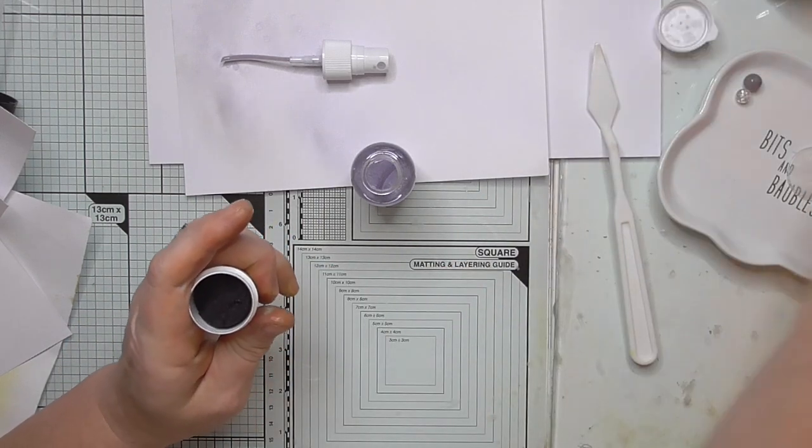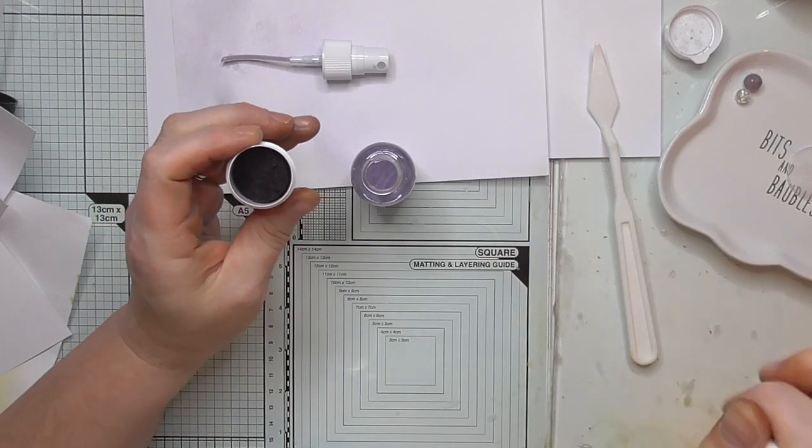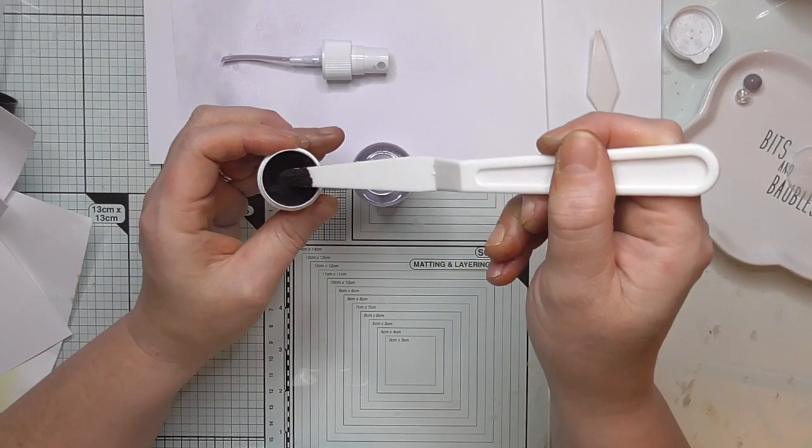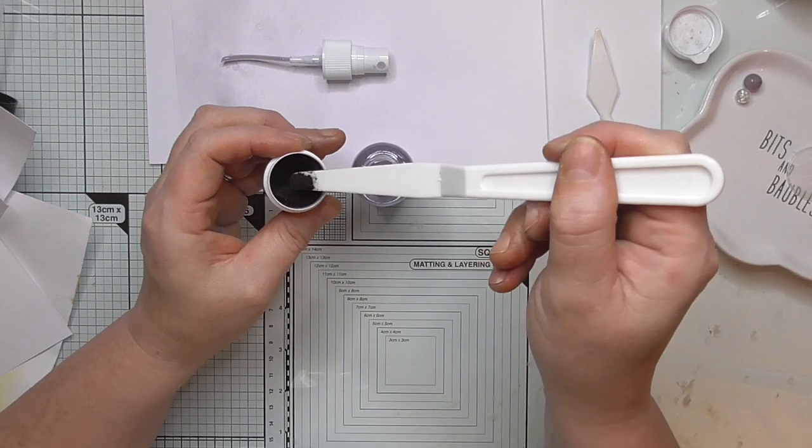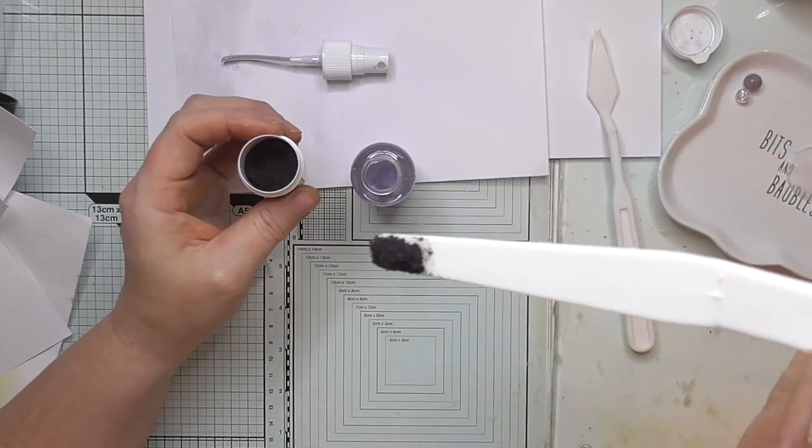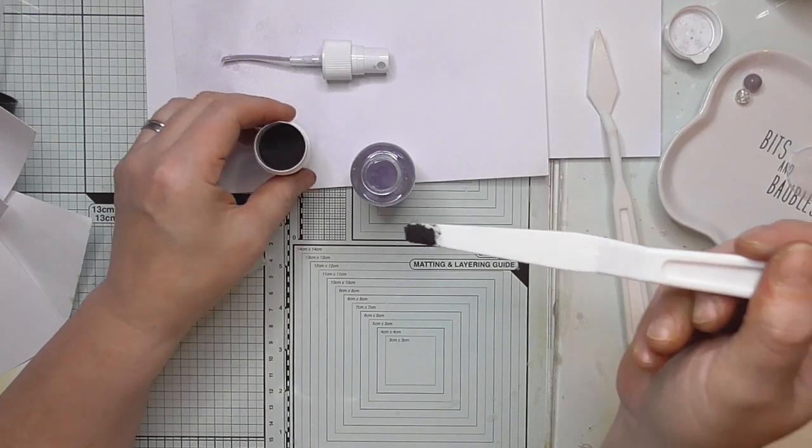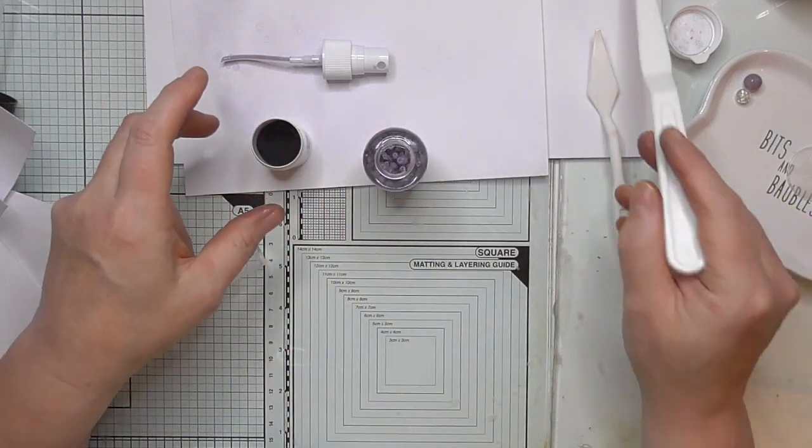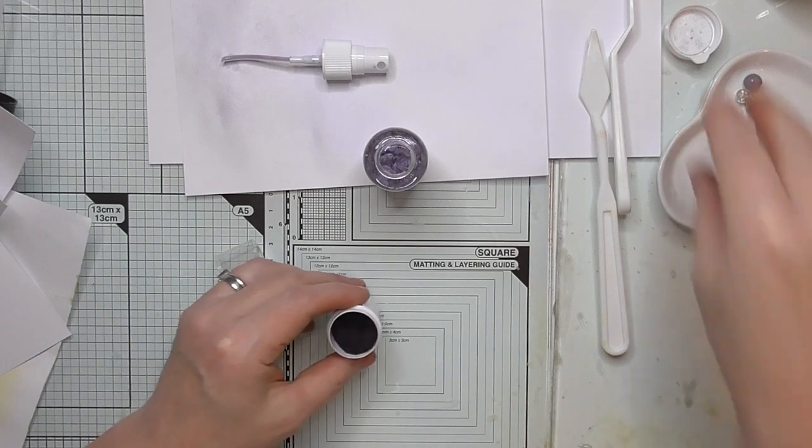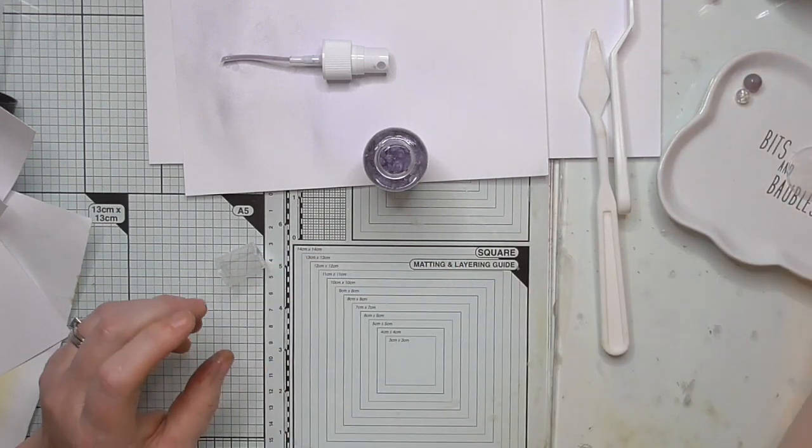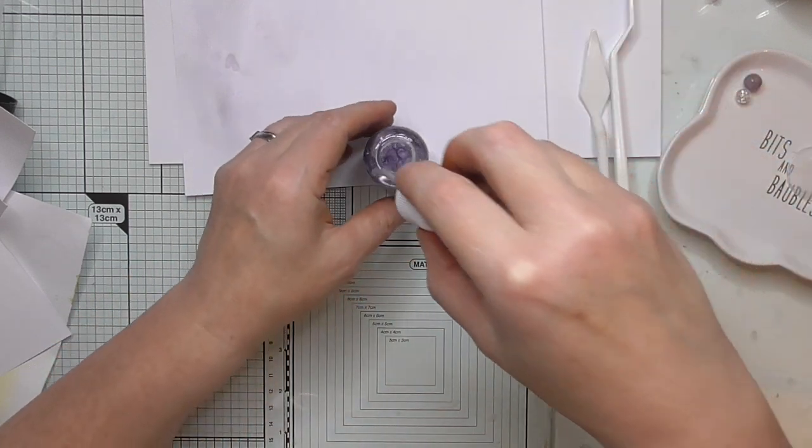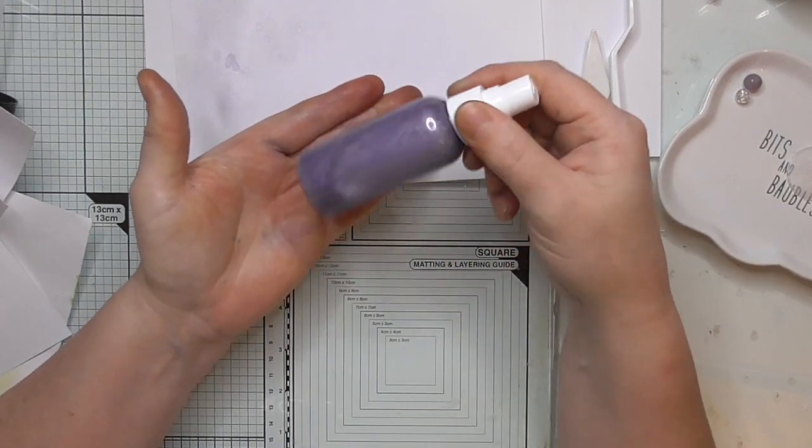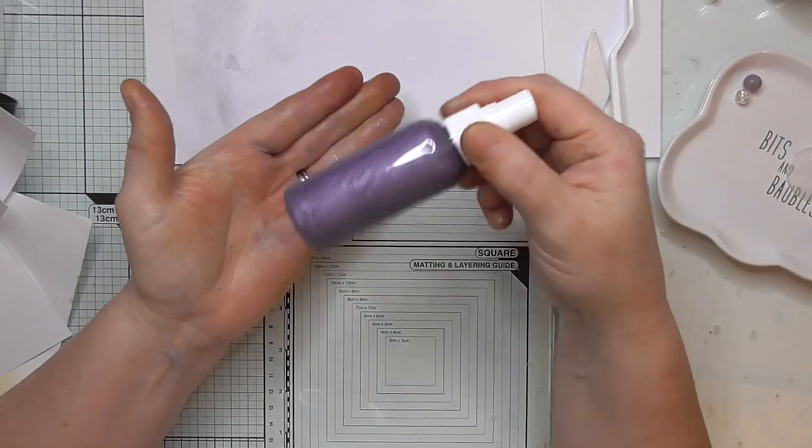This is where my Brusho's going to come in. I can see that shimmer, it's lovely. I just want a bit more depth of color in that, it's not strong enough. I'm going to get my Brusho and I've got a different spatula, not the one with the mica powder on, and I'm going to put a half of a tip end.